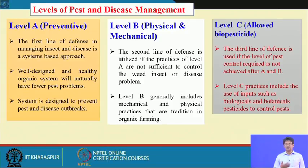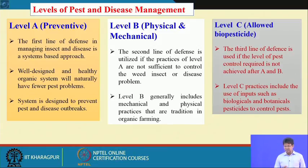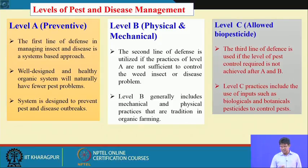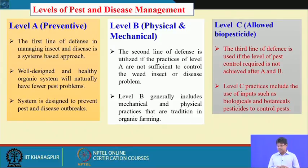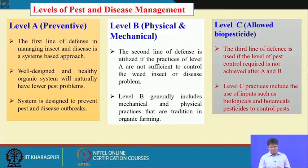Level B — physical and mechanical method — is the second line of defense, used if Level A practices are not sufficient to control weeds, insects, or disease. Level C is the third line of defense, used if pest control is not achieved after A and B. Level C includes use of inputs such as biologicals, natural predators, or botanical pesticides.